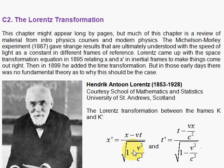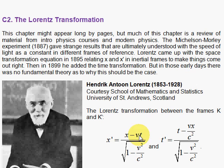Notice that there's an easy way to remember these equations. You take the Galilean Transformation and divide by a quantity that comes up a lot in relativity theory — that's the square root of 1 minus v squared over c squared. Then, for the time transformation, just like you have an x prime, an x, and a minus vt, you have a t prime, a t, and a minus vx. So: x prime, t prime, x, t, minus sign, minus sign, vt, and vx.